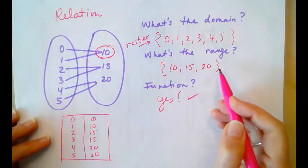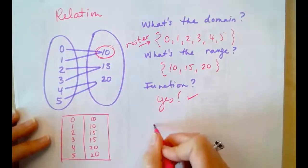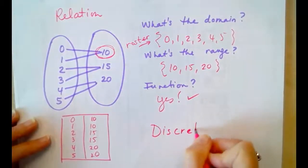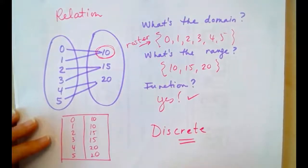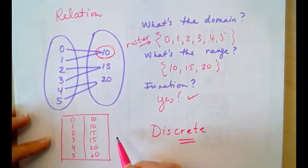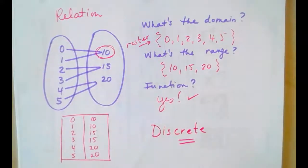So, domain, range, function, yes. It's also a discrete function. It's discrete because it can be listed or counted. That is the review for our quiz on Monday. Take care.